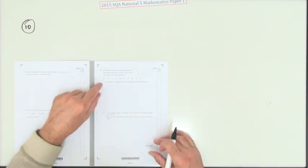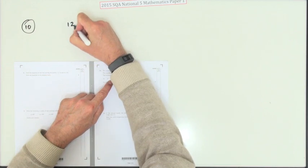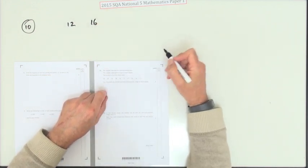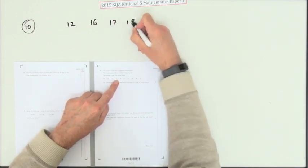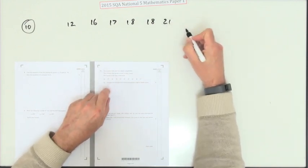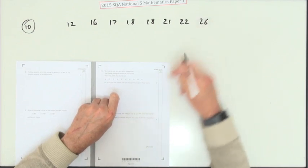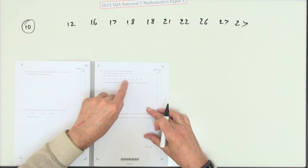What's this first one? Numerical order. What have we got? Smallest, that'll be 12, then it'll be the 16, then we've got a 17, then there's a couple of 18s, a 21, a 22, a 26, and two 27s. Is that them all? One, two, three, four, five, six, seven, eight, nine, ten.